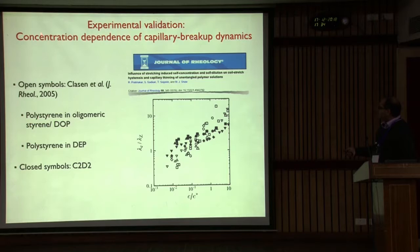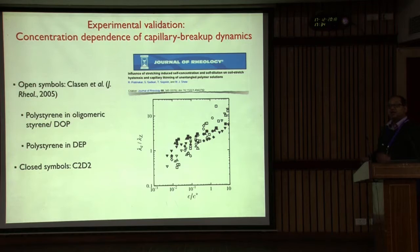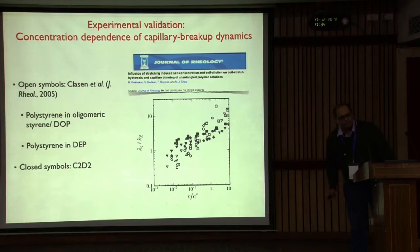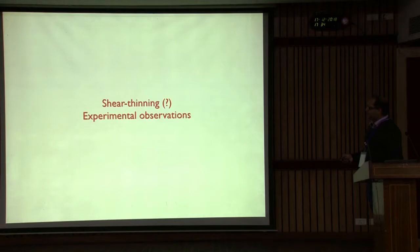We also showed that this model reproduces capillary breakup dynamics or CABER data when all these arguments are included. CABER is also a uniaxial extensional flow. Now in the last few minutes, let me talk about what I wanted to discuss at the beginning: shear thinning.